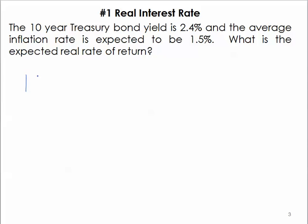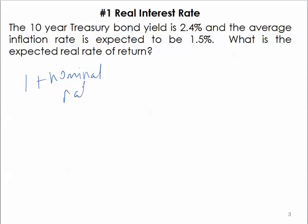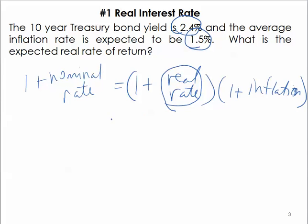The relationship between nominal interest rates is given by this equation: 1 plus the nominal rate is equal to 1 plus the real rate times 1 plus the rate of inflation. In this problem we are given the nominal rate of 2.4% and the inflation rate of 1.5%, leaving the real rate as the unknown that we have to solve for.